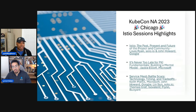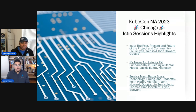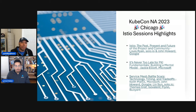The dust has settled on KubeCon North America in Chicago — the greatest city in the world. I want to highlight a couple of sessions that were really impactful for me. The first is 'The Past, Present and Future of Istio' with John Howard from Google and Lewis from Solo. It's a great session covering the whole evolution of Istio — if you want to understand Istio and learn some tribal knowledge through the years, this is a great session to view.